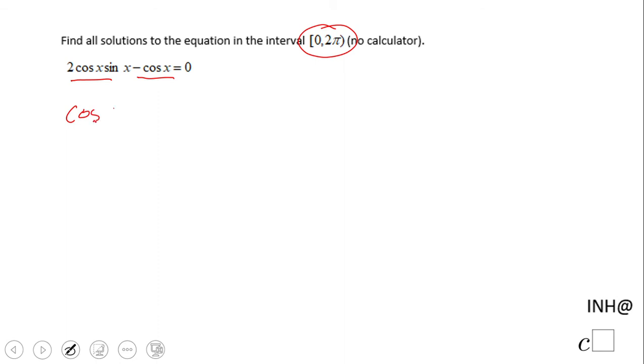That cosine of x can be factored out, and then we have 2 sine x minus 1, equals 0. And now we notice here we have a product equals to 0.